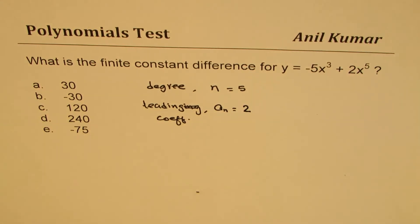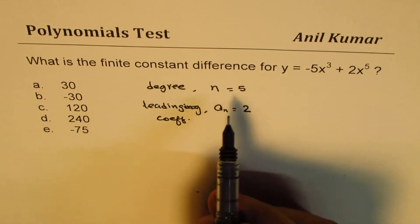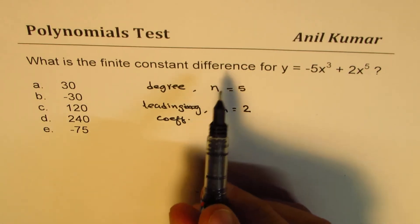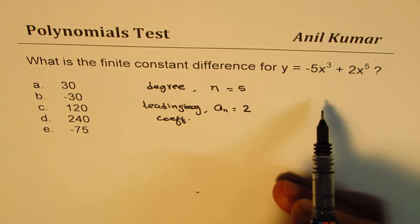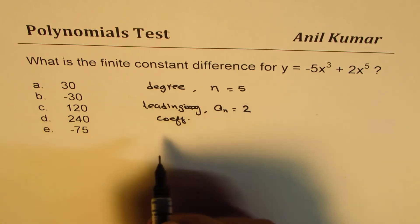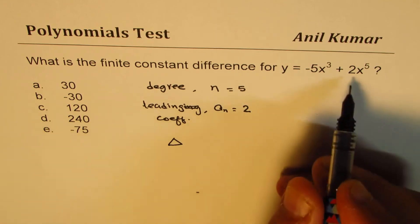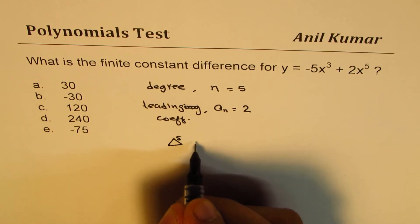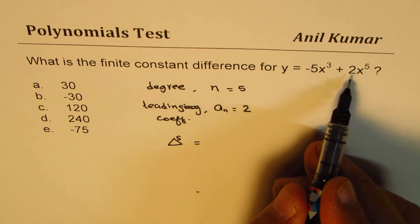Perfect, now for the constant difference you would actually make a table, get the constant difference also, that will take long time, but you can use a formula and this video I am sharing with you that important formula. The constant finite difference in this case will be the fifth difference since the polynomial is of degree 5.